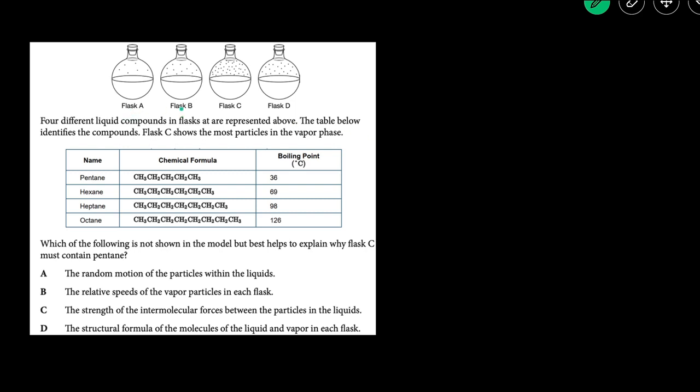Here we're given a picture of four flasks with liquids as well as gas particles above the liquid. We're also told that flask C contains the most number of particles in the vapor phase, and then we're also told the identity of the four compounds, the chemical formula, as well as the boiling point.